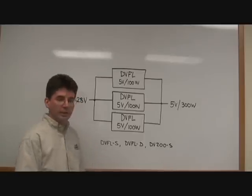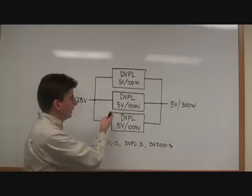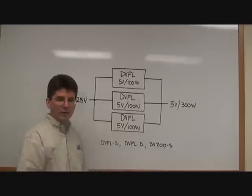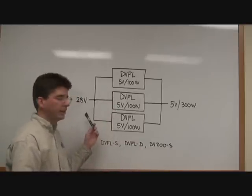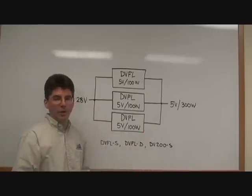So shown here, we take three DVFL converters, each 5 volts at 100 watts, and we construct a system, 28 volts input and 5 volts output at 300 watts.